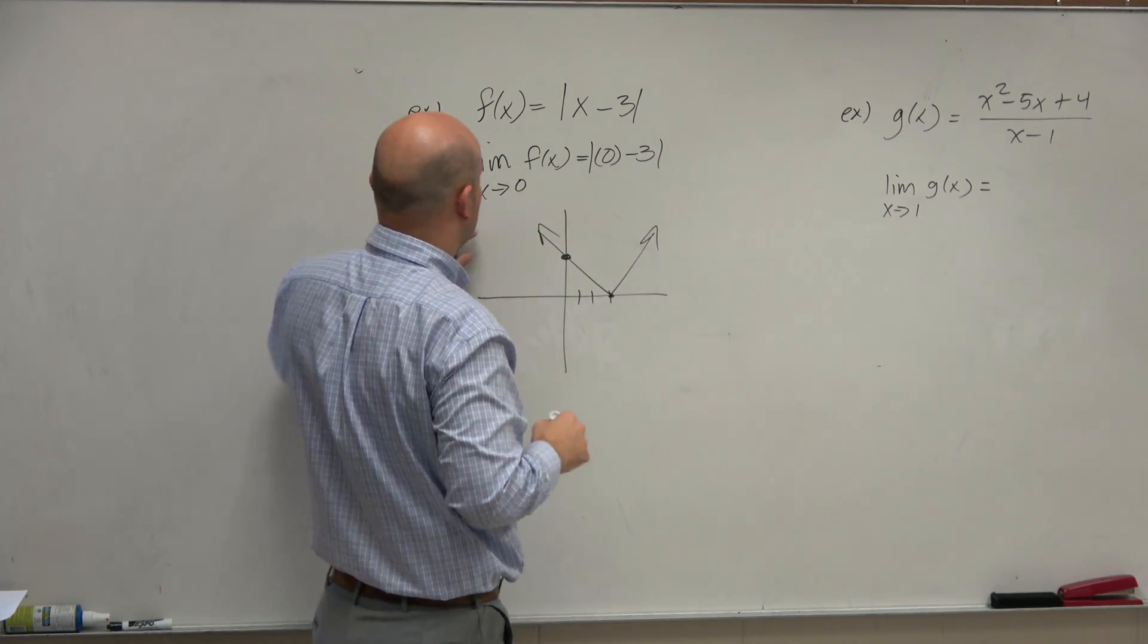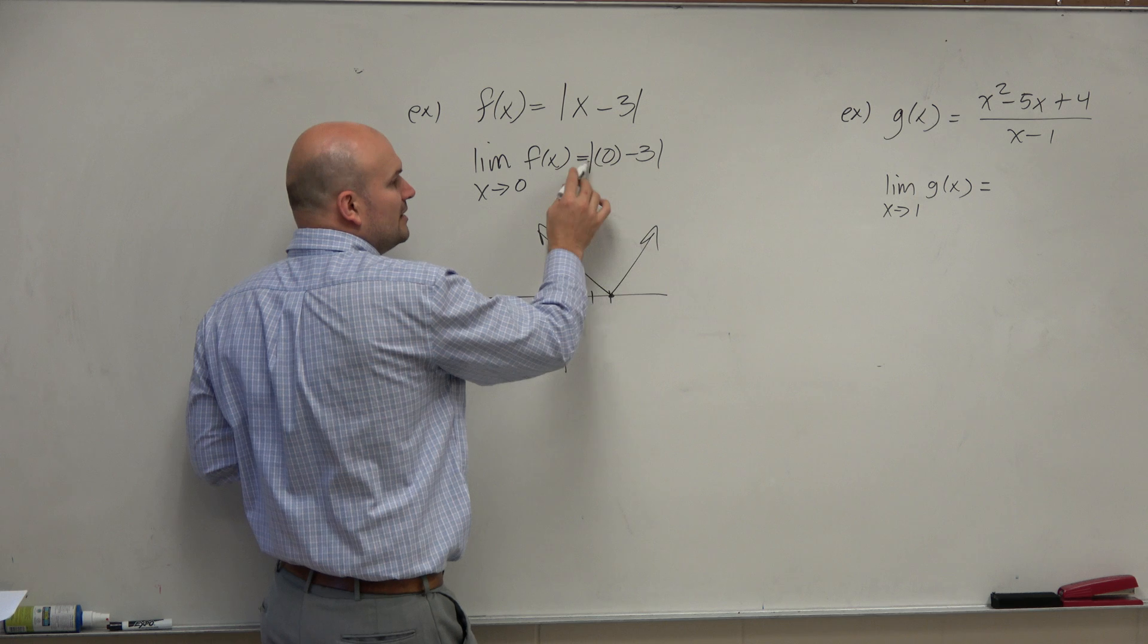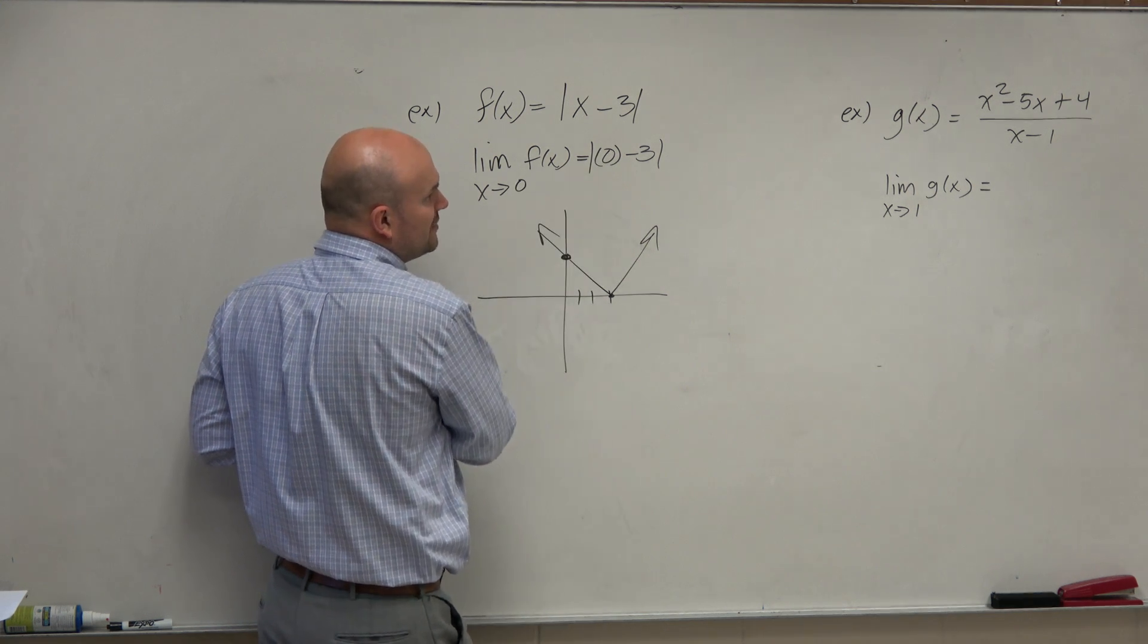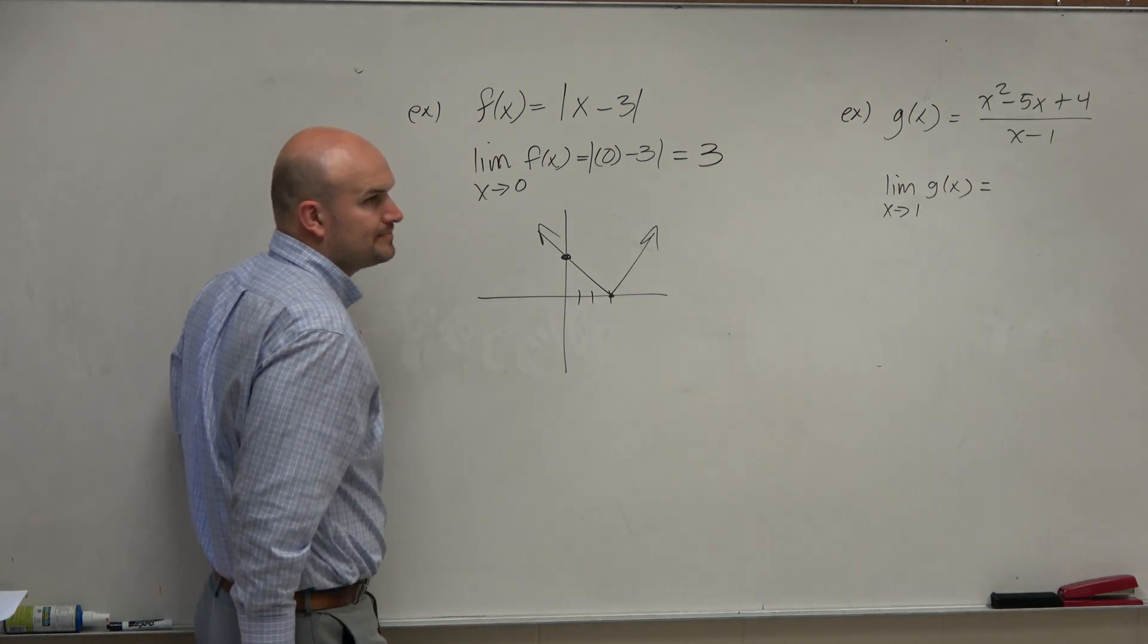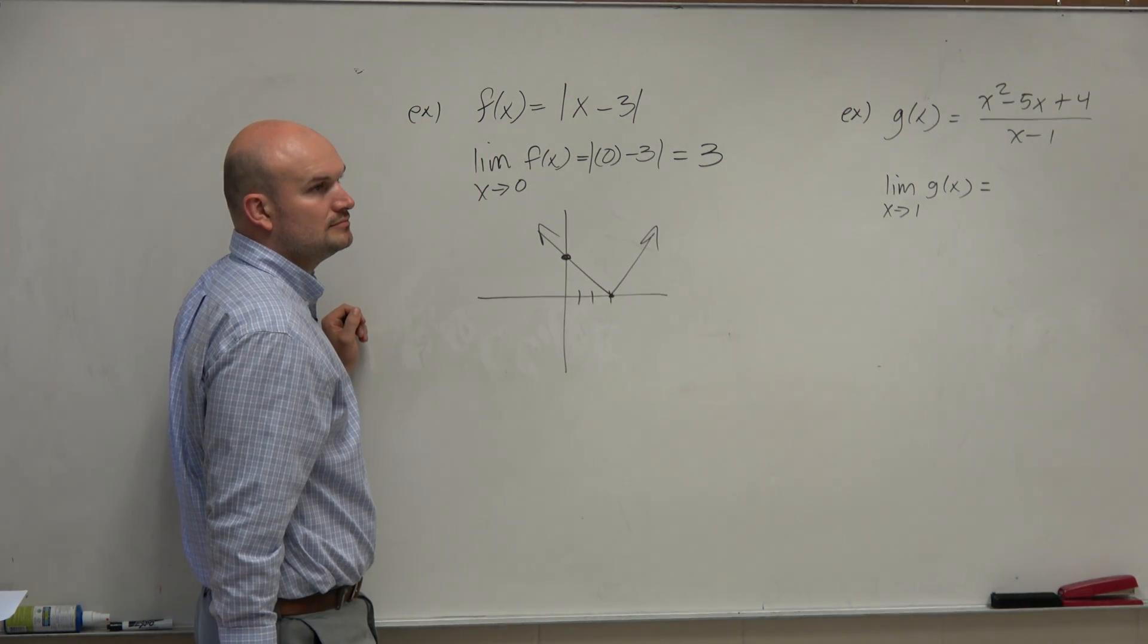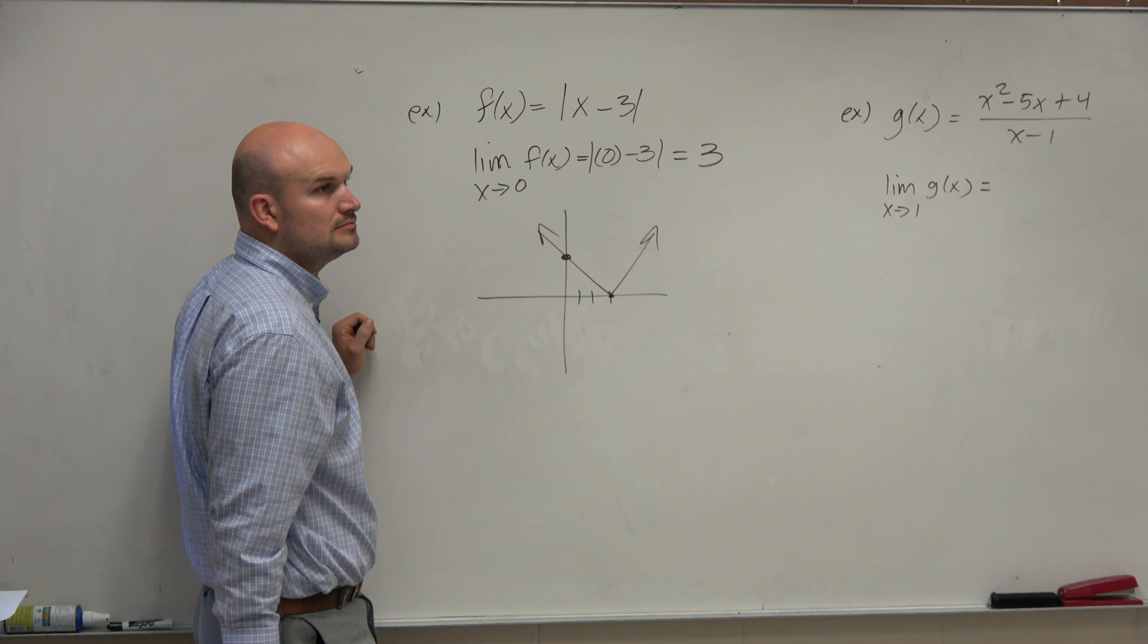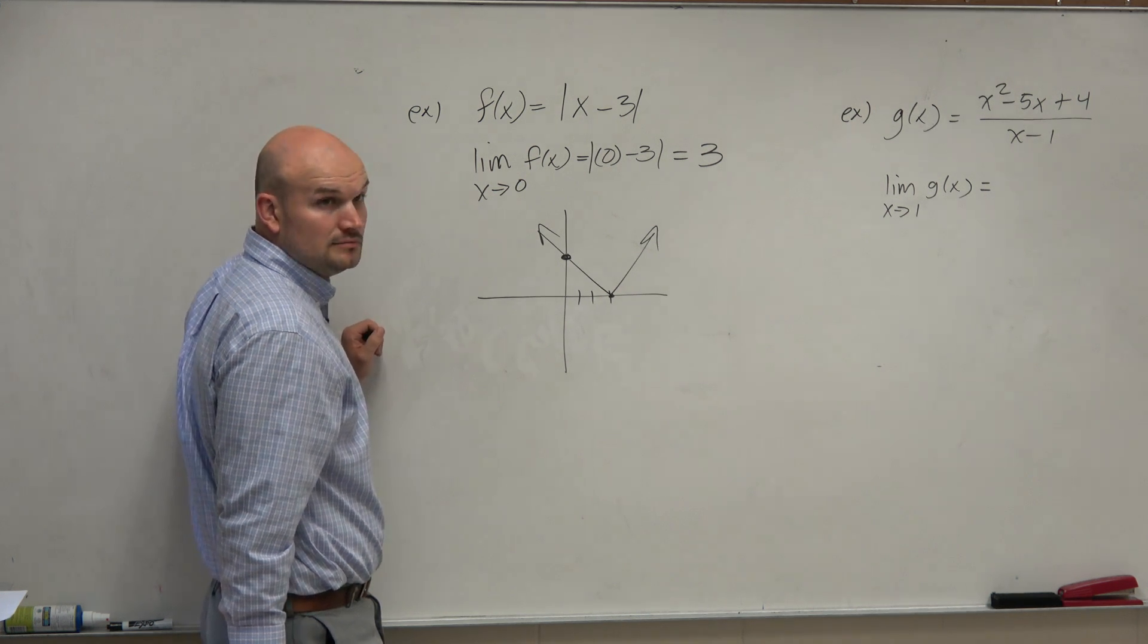So the limit of f of x as x approaches 0 is going to be the absolute value of 0 minus negative 3, which is then equal to 3. Right? Yes? No?